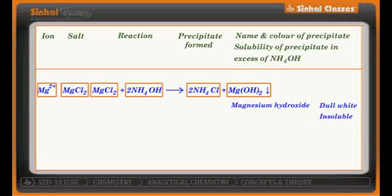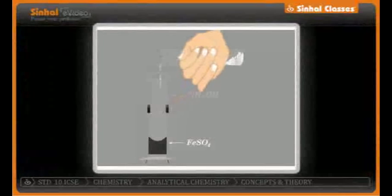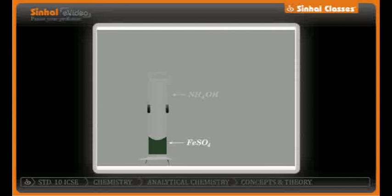Magnesium hydroxide is insoluble in excess of ammonium hydroxide. So you notice that MgCl2 gives an insoluble precipitate in both sodium hydroxide as well as ammonium hydroxide. Now let's take the second example: ferrous sulfate treated with ammonium hydroxide will again give a precipitate of ferrous hydroxide along with ammonium sulfate.